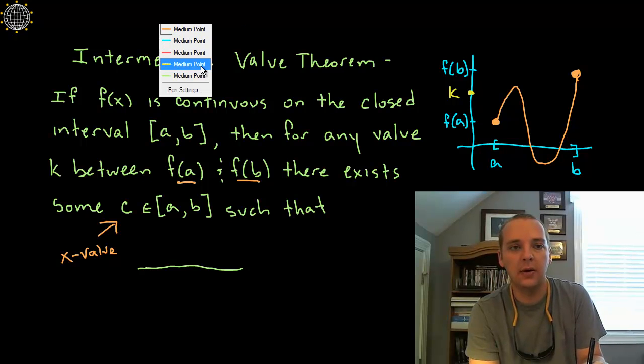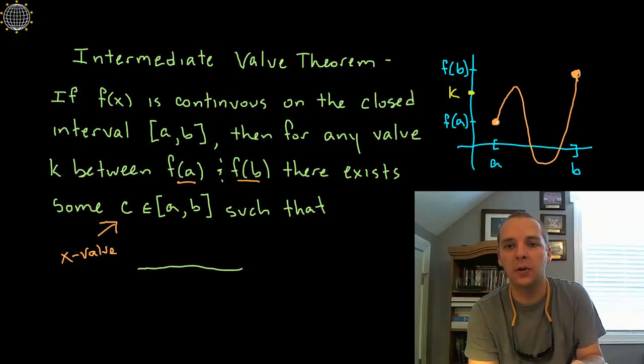Well if you look at it or think about it for a minute, hopefully what you came up with is there is at least one value c such that c maps to k, or to say it another way, if you look at k right here you see that there is some value c that will give you that y value.